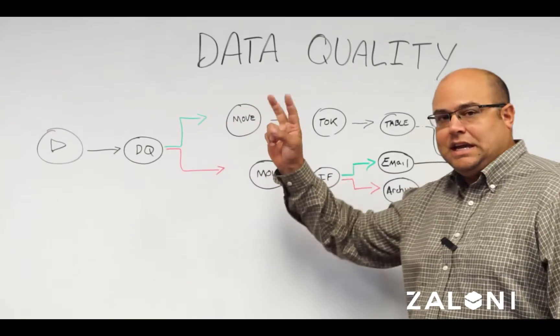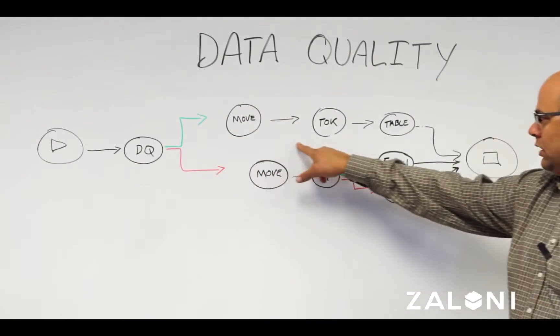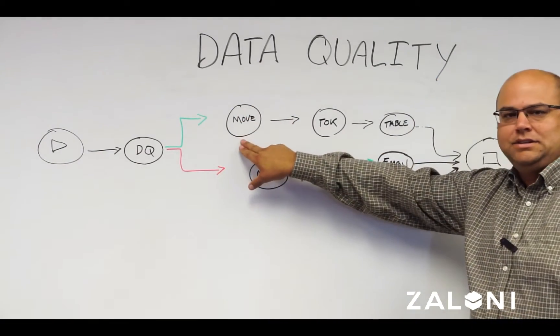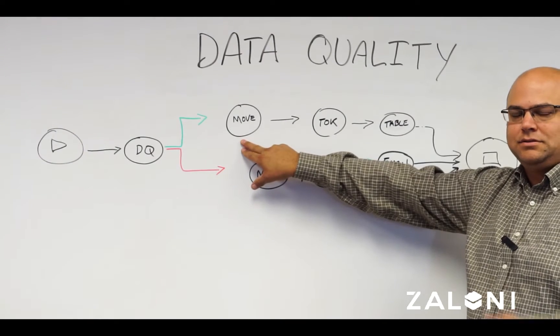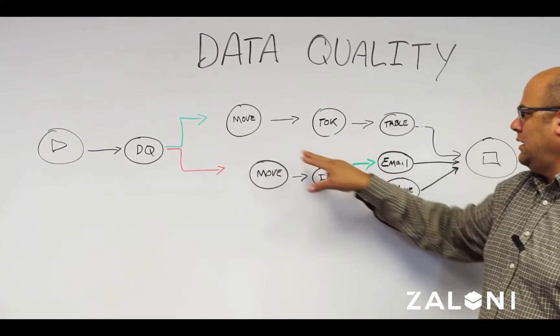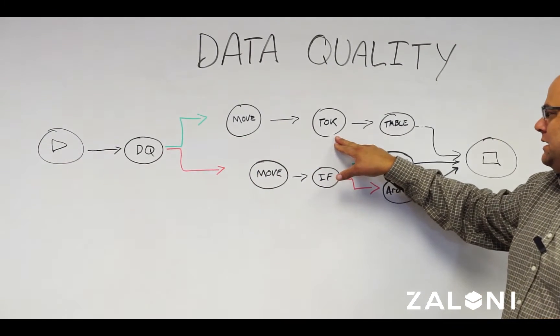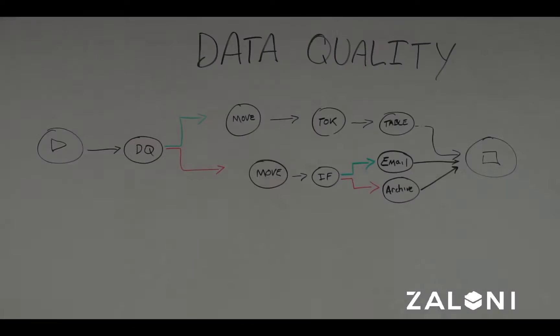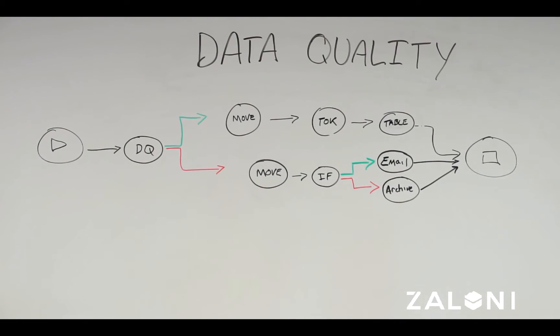we'll take this green good data route along the workflow here. Maybe we move that data to a different place in HDFS to move it to a different zone. Perhaps we tokenize that data before we turn it into a table in Hive.